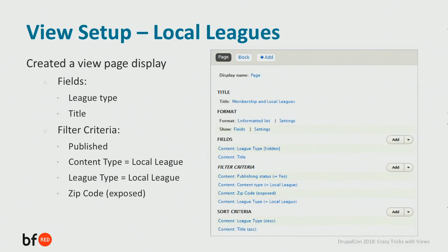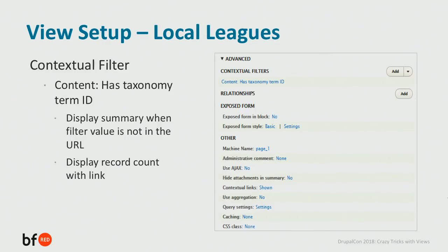To start off, we created a view page display. It's important to note this view can accept two filter criteria. The first is zip code, which we have as an exposed filter — that allows the user to search by zip code and find their matching local league. The second is a contextual filter: has taxonomy term ID. On our local league content type, we have a state field that's an entity reference to the state taxonomy vocabulary, so state term IDs are used as filter values. We set it to display a summary when there is no filter value in the URL — that's how we get the state name to display — and also set it to display a record count with a link, showing the number of local leagues within each state.